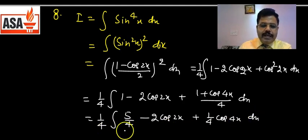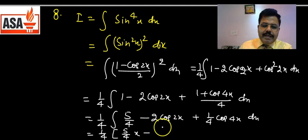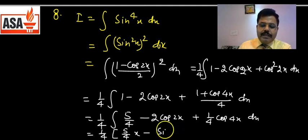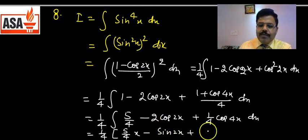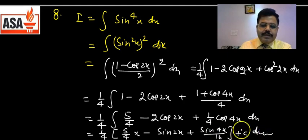अब integrate करने पर: 1/4 × [5x/4 − 2·sin2x/2 + (1/4)·sin4x/4] + c = 1/4 × [5x/4 − sin2x + sin4x/16] + c। Answer: 5x/16 − sin2x/4 + sin4x/64 + c। Simplifying: 5/16 x − sin2x + sin4x/16 + c।